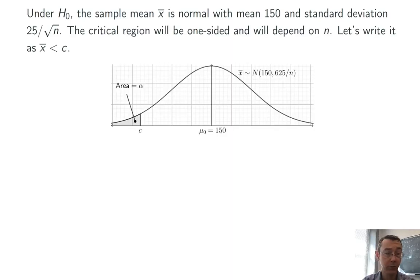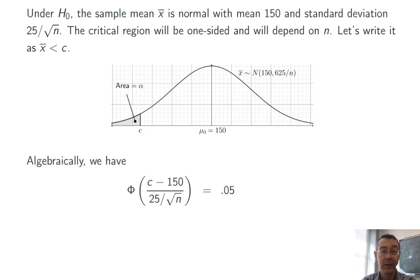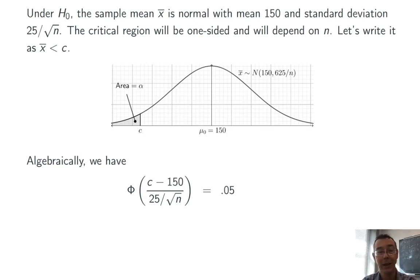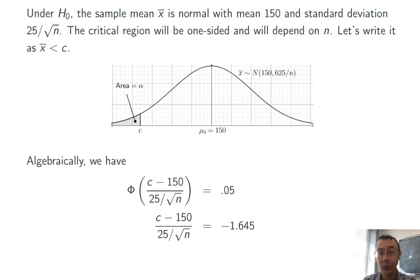With this information, we can compute a critical region for this test. It's going to be one-sided and will depend on n. Here's a picture illustrating it. Let's let the value c represent the cutoff for this critical region. We can do a direct probability calculation using the normal CDF for the standard normal distribution — let's call that phi. If we take that critical cutoff value c, transform it to a z-score, and apply the normal CDF, we should get 0.05 — that's the probability of the type 1 error, the area of the shaded region on the left. We know that a z-score of negative 1.645 corresponds to that cumulative probability. Solving for c gives us c equals 150 minus 41.13 divided by the square root of n, acknowledging that 41.13 has some rounding in it.